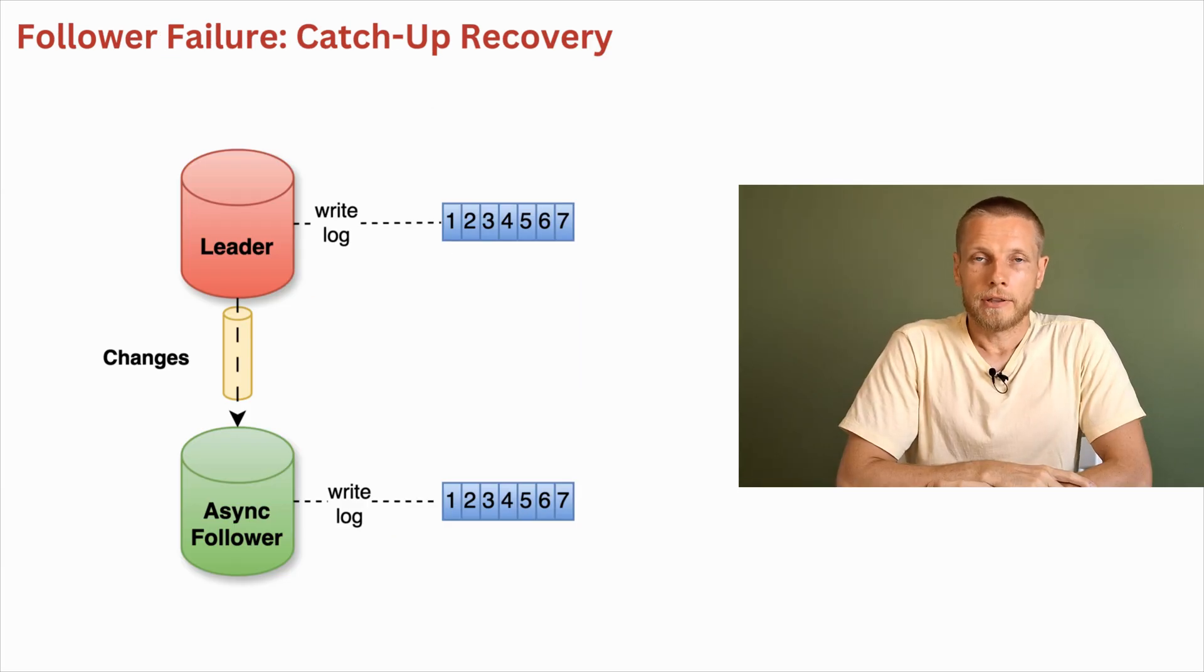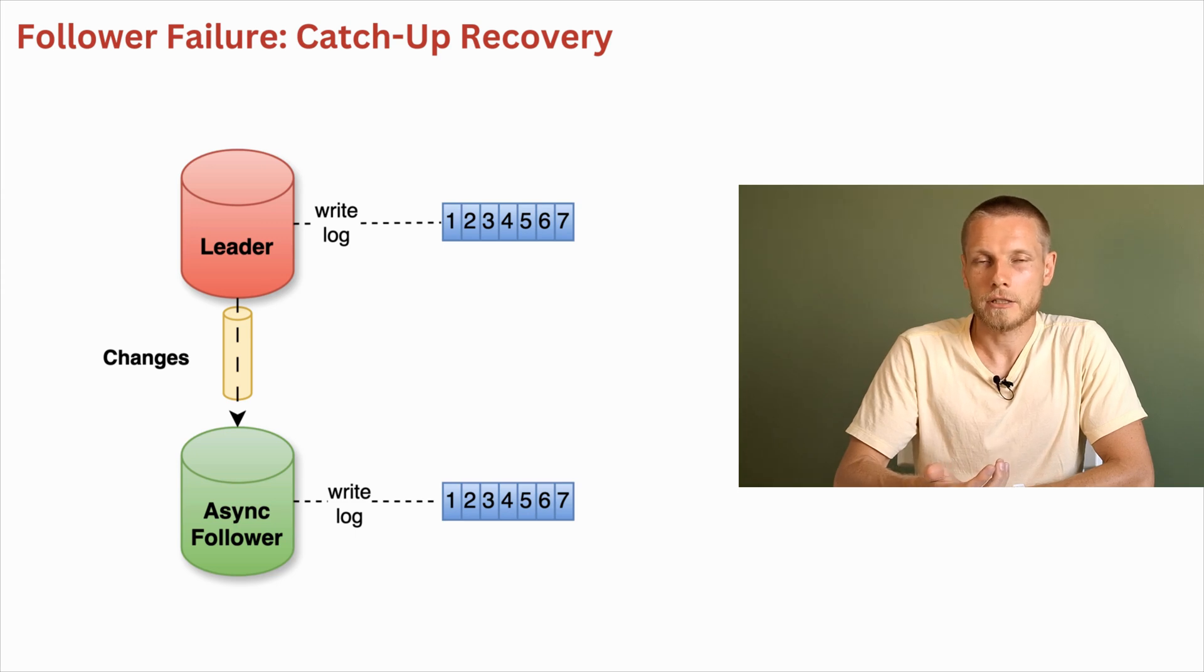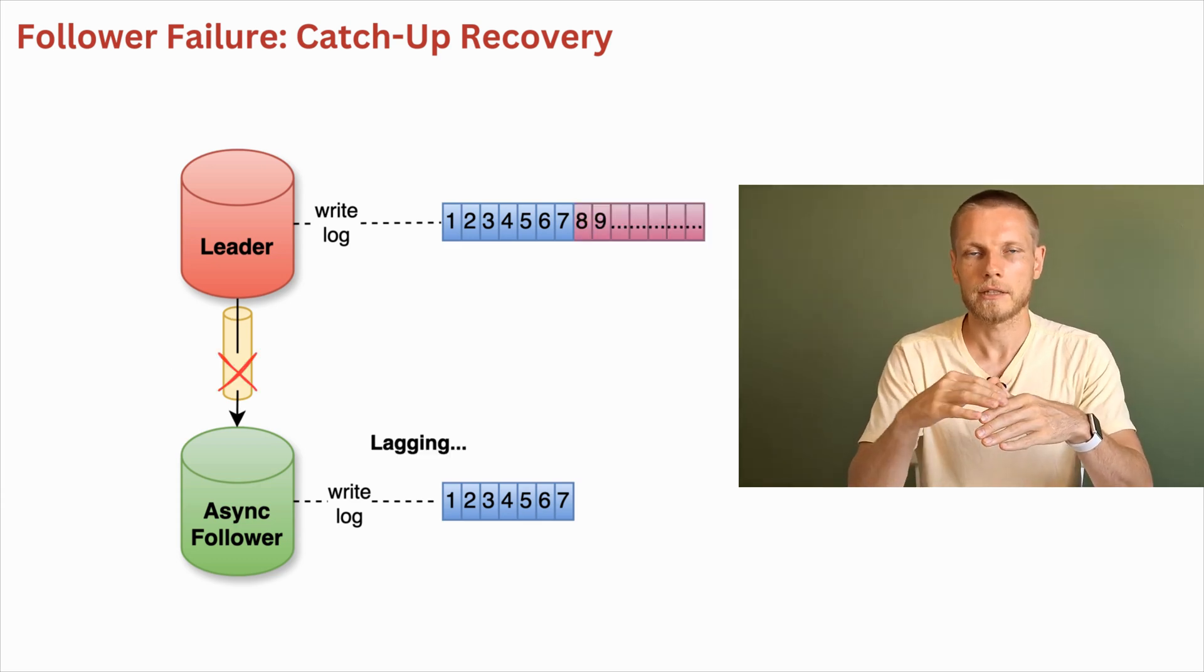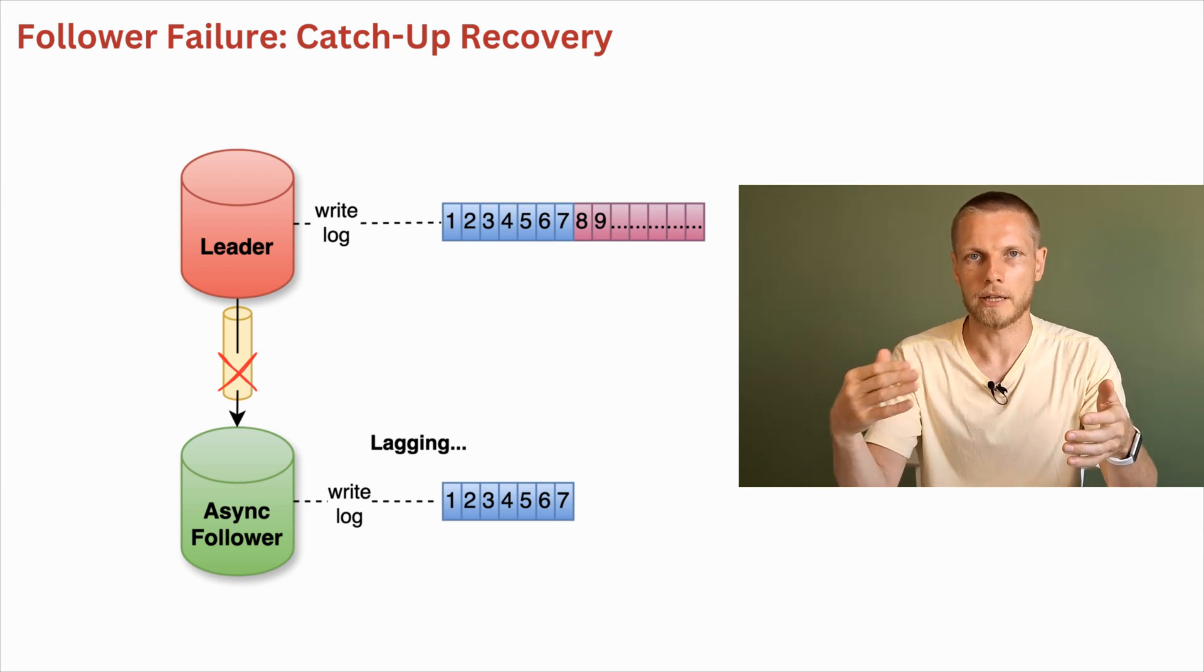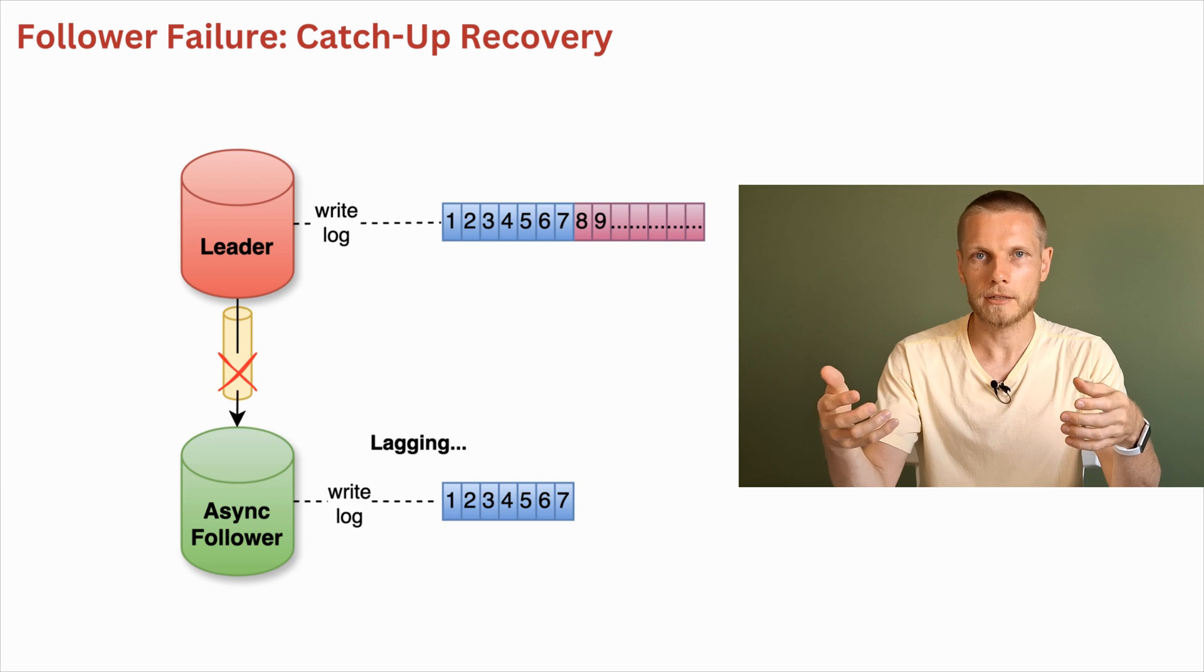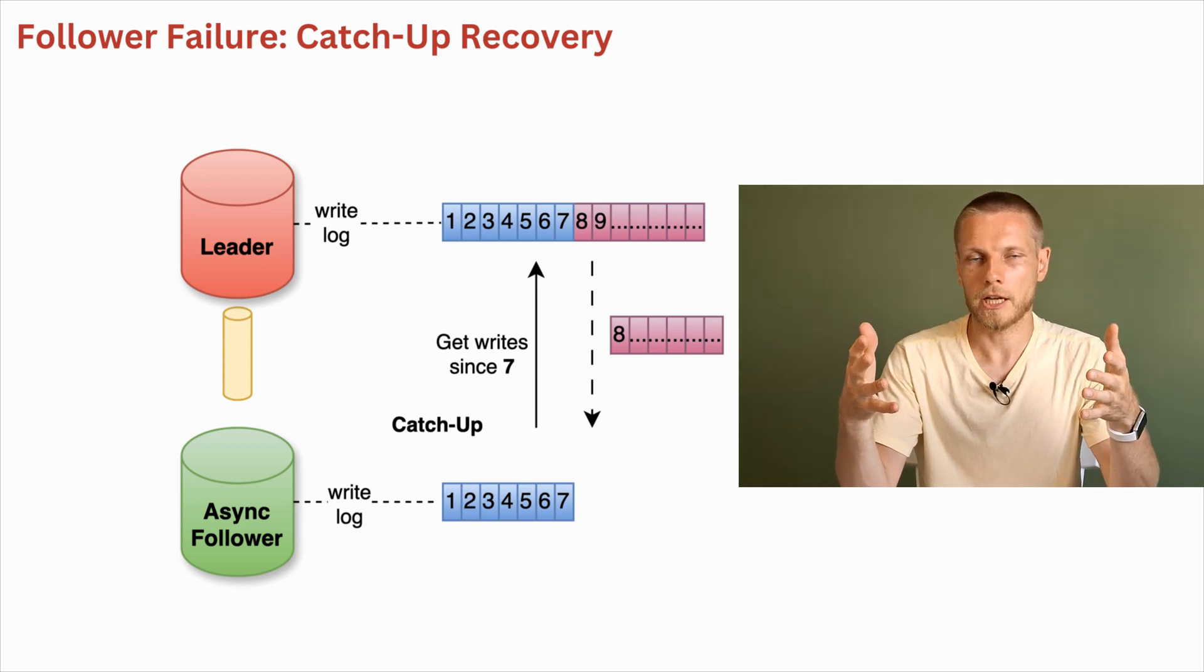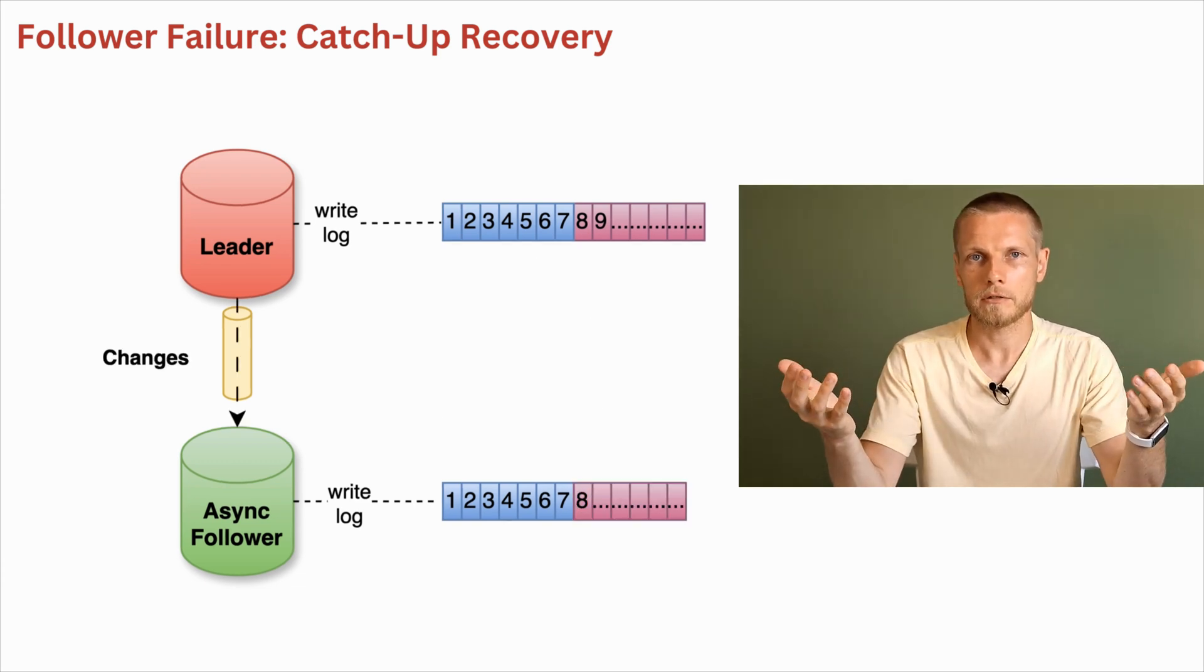Failure of the follower is handled very similarly to setting up new follower. During ongoing replication, follower has a log of changes which is synchronized with leader log of changes for synchronous replication or lags behind for asynchronous replication. Here we see leader and follower which have synchronized log and then connection breaks and follower starts to lag behind the leader because leader is still accepting new writes. When follower is back online, it detects that it was down and it requests all changes since its last position in the log from the leader. And once it has received them all, it can be used for queries.